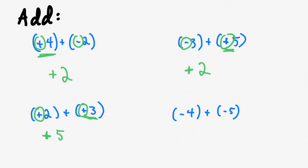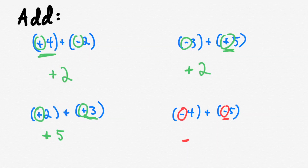And the last one: negative four plus negative five. Which one has a greater absolute value? That's negative five — five is more than four — so our answer is going to be negative. Do these have different signs? No, the signs are the same. So that means I do addition — four plus five is nine. The answer is negative nine. You can see I did four examples very quickly using this method, and these are all the different problem types. I hope you learned something!